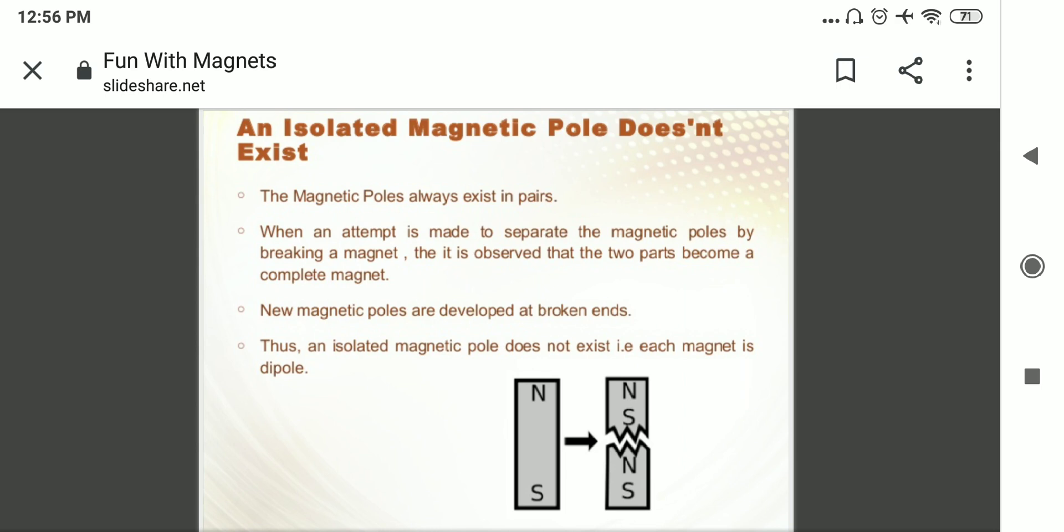And today we will see that poles of magnets can't be isolated or can't be separated. So here is an activity, here I have taken one bar magnet whose one end is north pole and other end is a south pole.